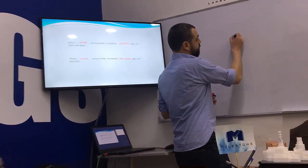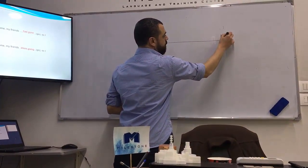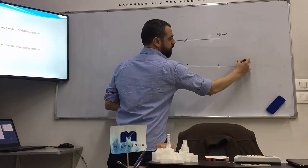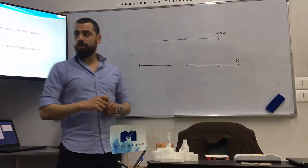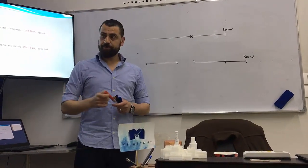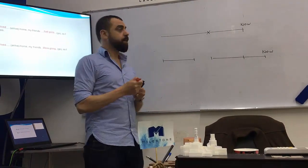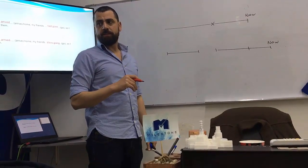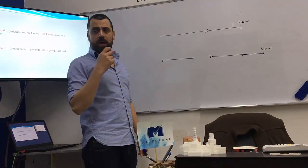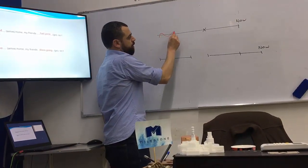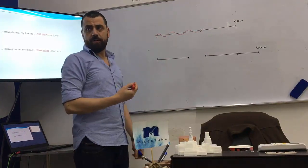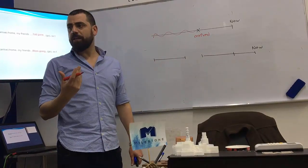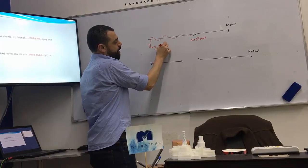Now look here — this is now. And look here — this is now. Who can tell me which sentence matches which timeline? Which one is past continuous, which one is simple past? The past continuous is the first one. When I arrived home — arrived here — I saw my friends. But my friends, what were they doing? They were going.